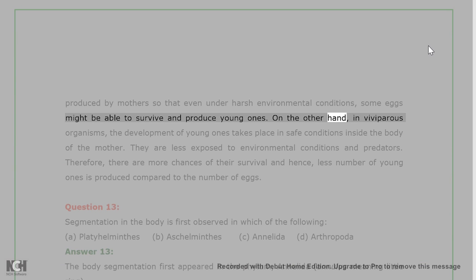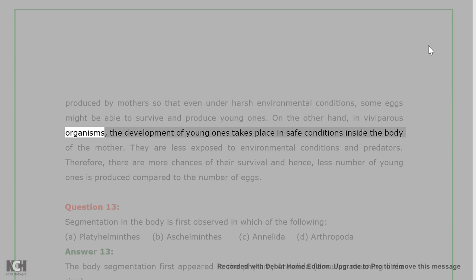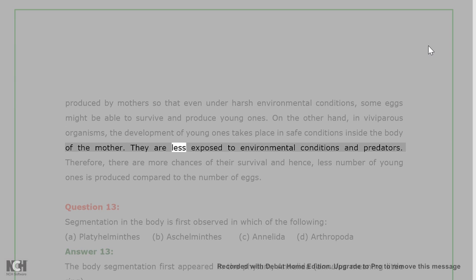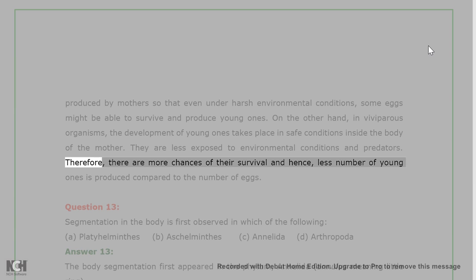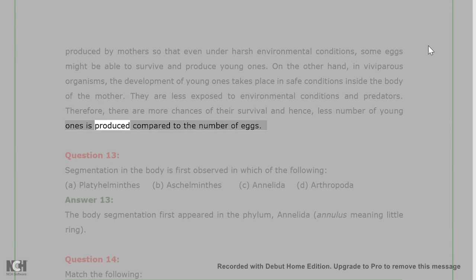On the other hand, in viviparous organisms, the development of young ones takes place in safe conditions inside the body of the mother. They are less exposed to environmental conditions and predators. Therefore, there are more chances of their survival and hence, less number of young ones is produced compared to the number of eggs.